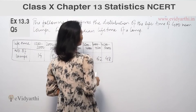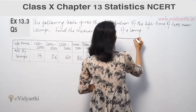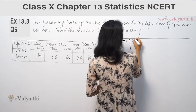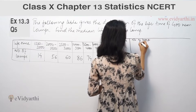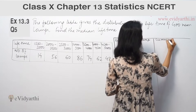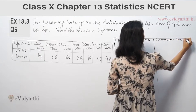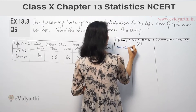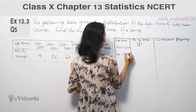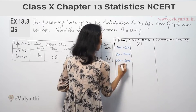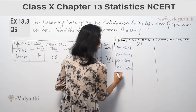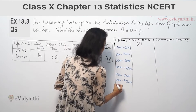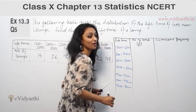So for finding the median, we will draw this table. The columns are: lifetime, number of lamps (frequency), and cumulative frequency. The lifetime intervals given are: 1500–2000, 2000–2500, 2500–3000, 3000–3500, 3500–4000, 4000–4500, and 4500–5000.